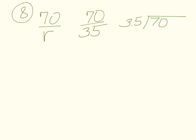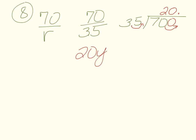We don't want a decimal on the divisor side, so we get rid of it and move it on the other side too. We have 35 going into 700. 35 goes into 70 twice, and with a zero placeholder, the answer is 20. So 20 years is our answer to number eight.